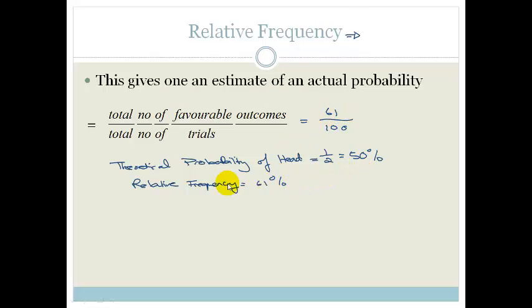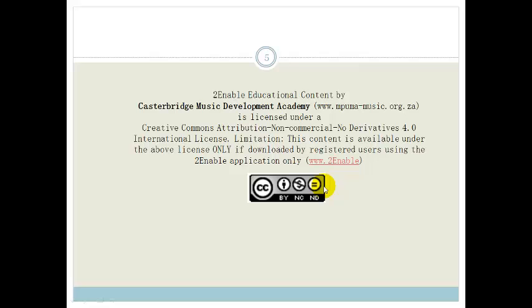And that might have to do with things like the fact that the one side of the coin is heavier than the other side of the coin, or the person that's flipping the coin might have a little flick to his hand, or something like that. So, in this experiment, the relative frequency was 61%, compared to the theoretical probability of 50%. And that is totally the difference between theoretical probability and relative frequency. And that's it, grade tens, nice and easy. Have a lovely day.